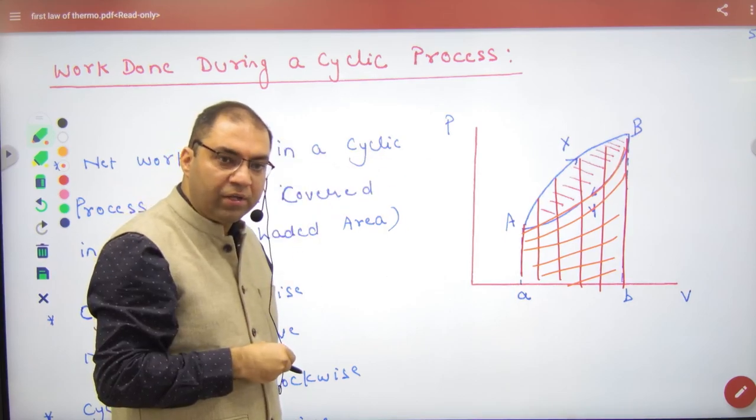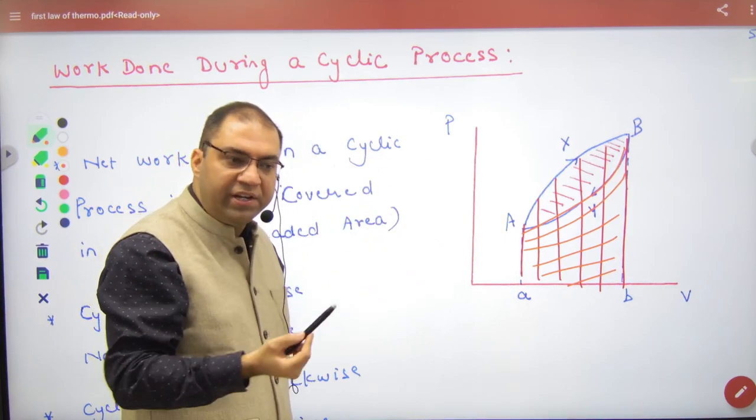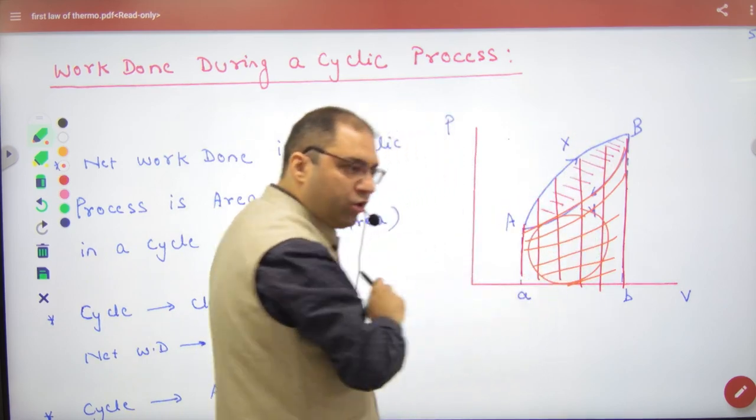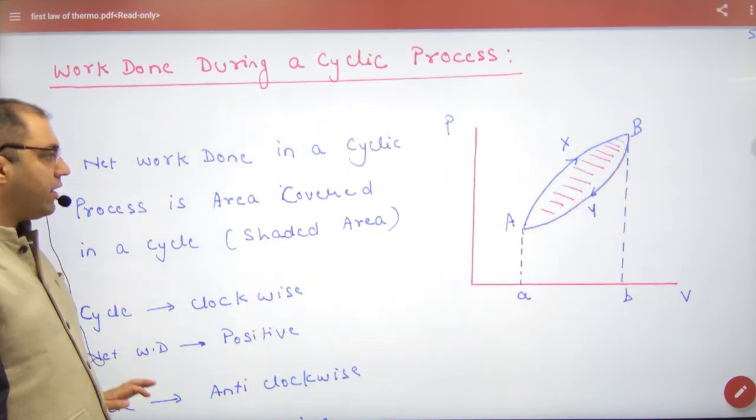Expansion work done is positive. Compression work done is negative. Net amount of work done is expansion area minus compression area - then you will have this area.